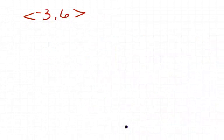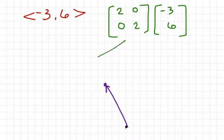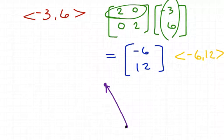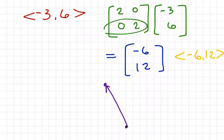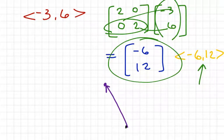Now let's try another one. At the top of the next page, you've got the vector (-3, 6). We're going to transform it using the matrix (2, 0, 0, 2). Draw this vector on your grid. Write your transformation matrix and vector matrix, then do the multiplication. We get: 2 times -3 is -6, plus 0 times 6 is just -6. Then 0 times -3 is 0, plus 2 times 6 is 12. So our transformation vector is (-6, 12).